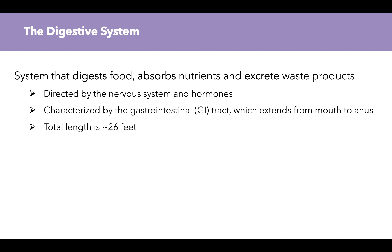The last system we talk about is the digestive system, which is pertinent for this course. It is the system that digests food, absorbs nutrients, and excretes waste products. Digest means breaks down; absorb means bringing nutrients from the digestive tract into the body; and excrete means to get rid of. The digestive system is directed by the nervous system and hormones. It is characterized by the gastrointestinal tract — the GI tract or digestive tract — which extends from our mouth to our anus, with a total length of about 26 feet.